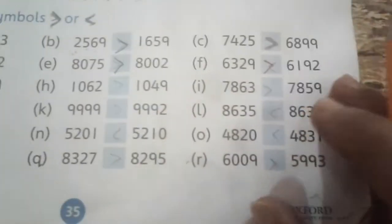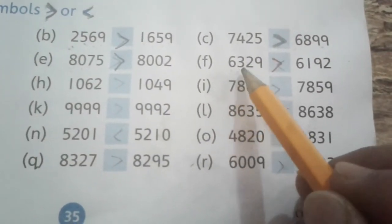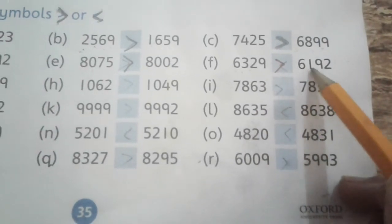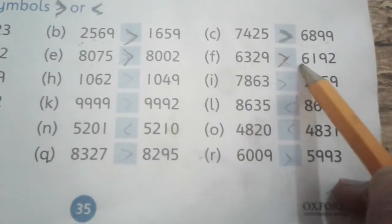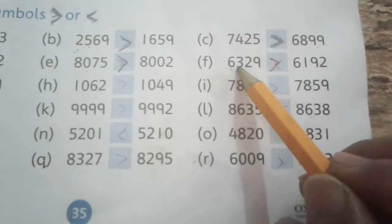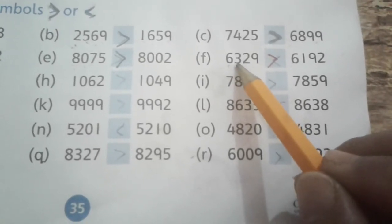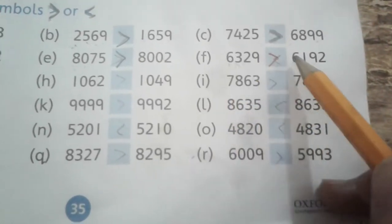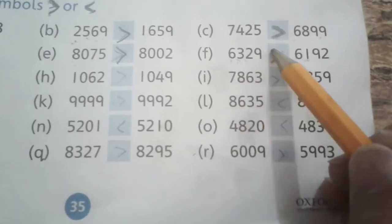Next is 6329 versus 6192. 6000 is the same on both sides. Then next check the hundreds - 300 is bigger than 100, which means 300 is bigger than 100, so this number is bigger.